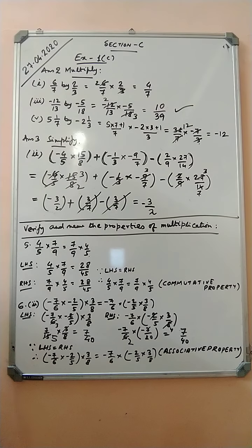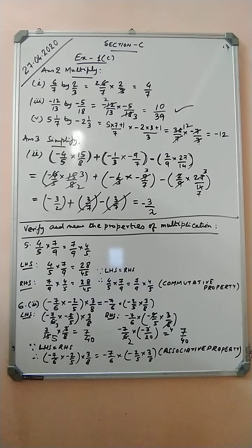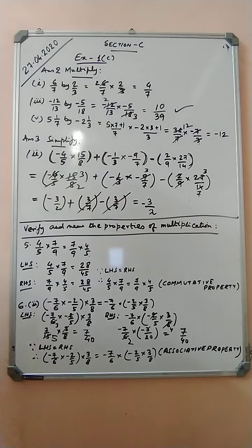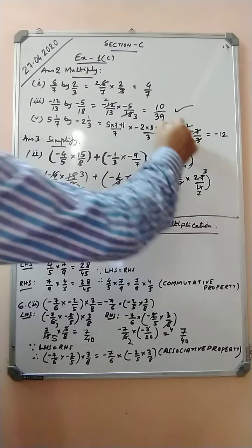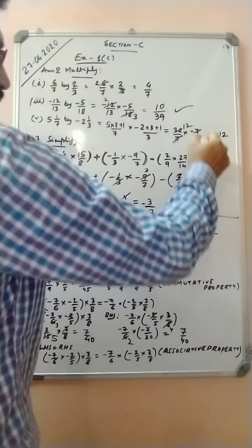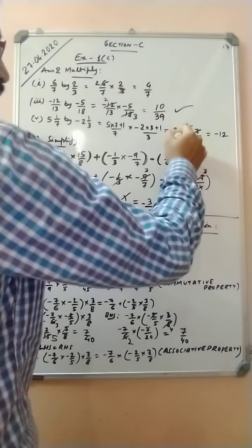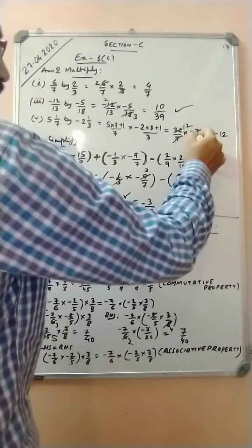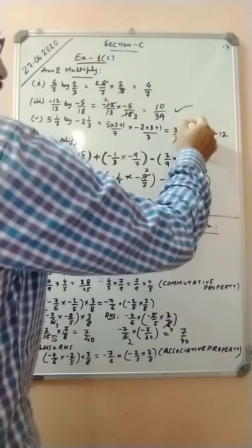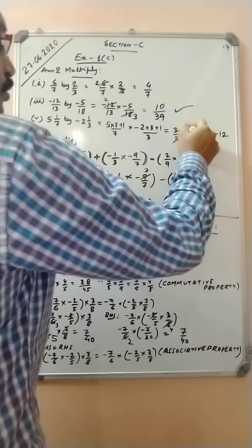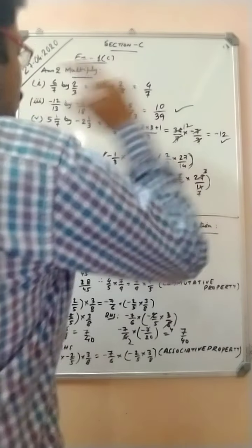Part number five: five and one by seven, multiplied by minus two and one by three. So it is five into seven plus one, by seven, into minus two into three plus one, by three. That gives 36 by 7, into minus 7 by 3. The sevens cancel, giving minus 12.